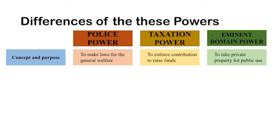Taxation power is solely exercised to raise funds, because police power needs funds to build buildings, hospitals, educational facilities, and so on. Eminent domain power is focused on taking private property for public use — for example, if a property needs to be converted for public use, the government can do so.